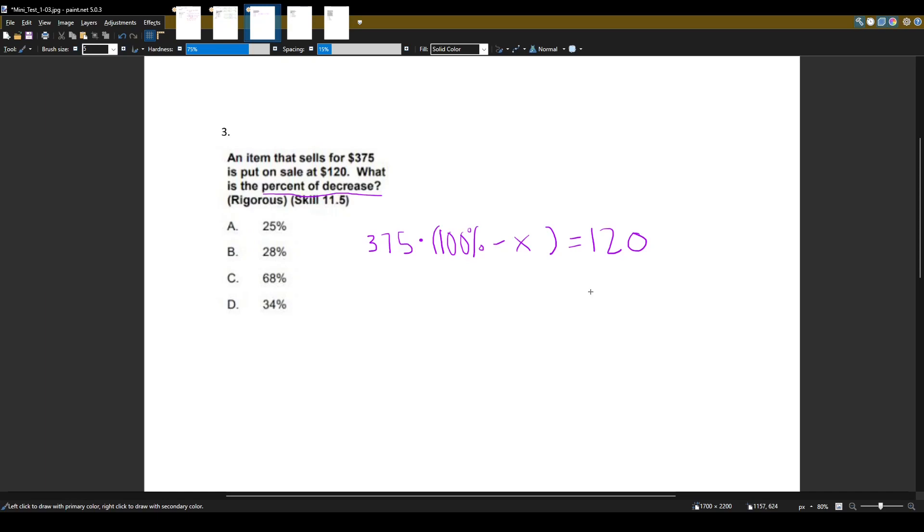Let's rewrite this with decimals. 375 times 100% is the same thing as 1. Why? Because to go from percent to decimal, we divide it by 100. 100 divided by 100 is 1. Or you can think of it as we move the decimal place two to the left. So we have 1 minus X equals 120.